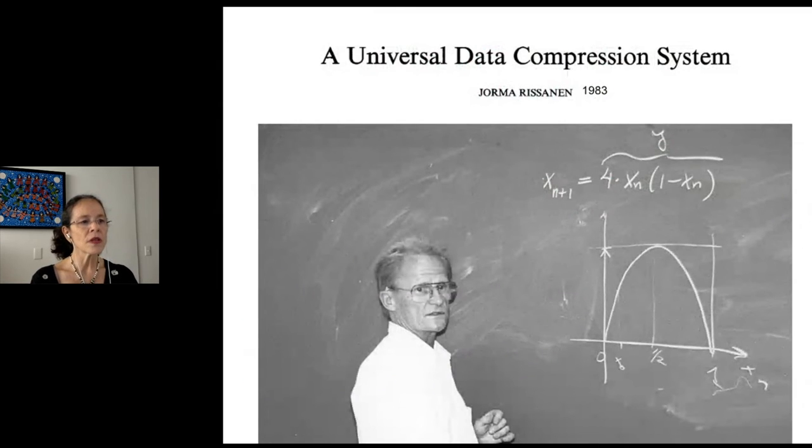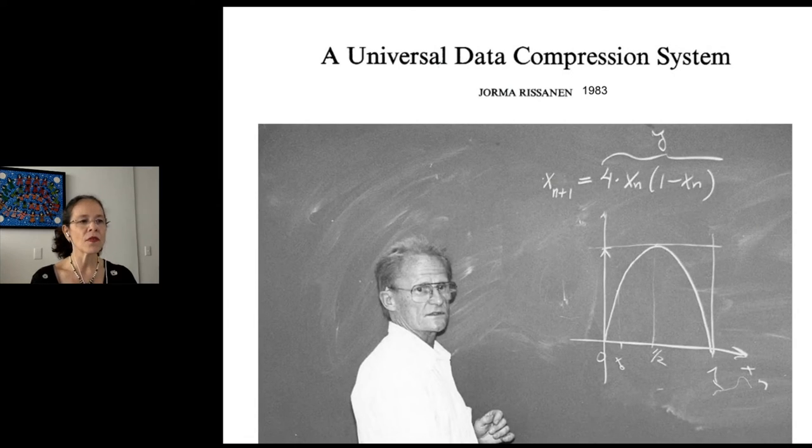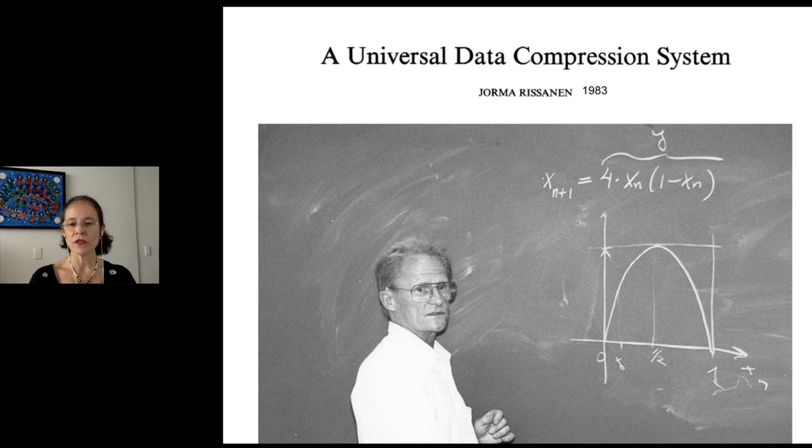The chosen model was based on the work of Jorma Rissanen, who proposed in 1983 a class of stochastic models capable of compressing any sequence of symbols generated by a source. Rissanen introduced a new class of probabilistic models, namely the class of stochastic chains with memory of variable length, or context-tree models.